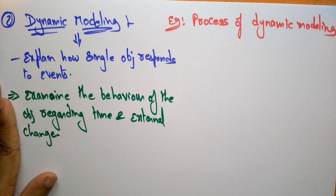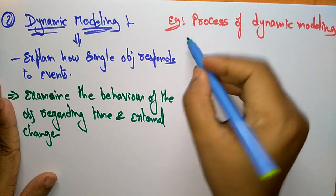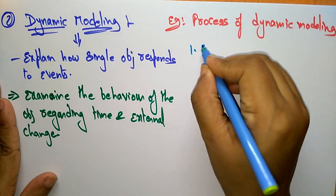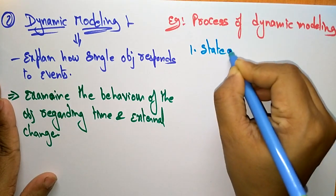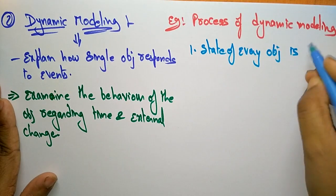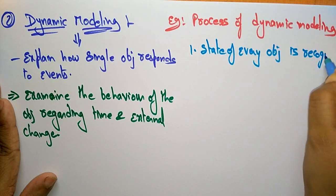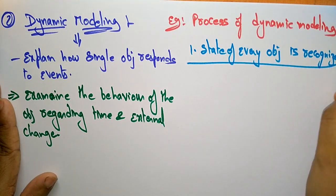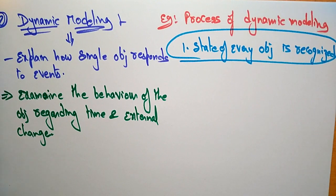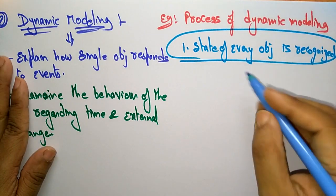The first step is that the state of every object is recognized. First, I recognize whatever objects are present in the requirements that I am going to create, and for each object the state has to be recognized.